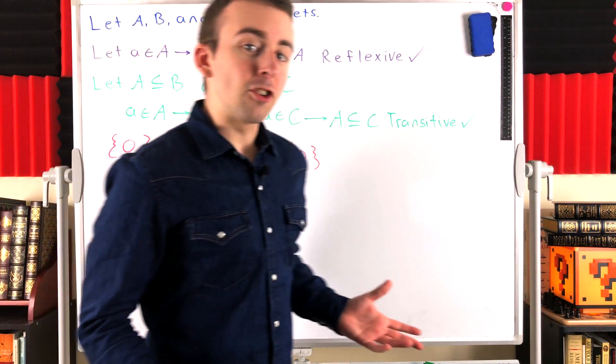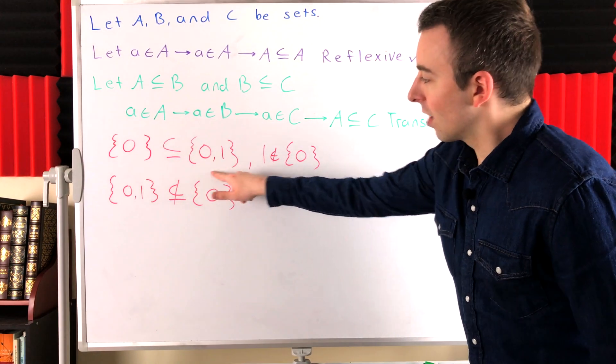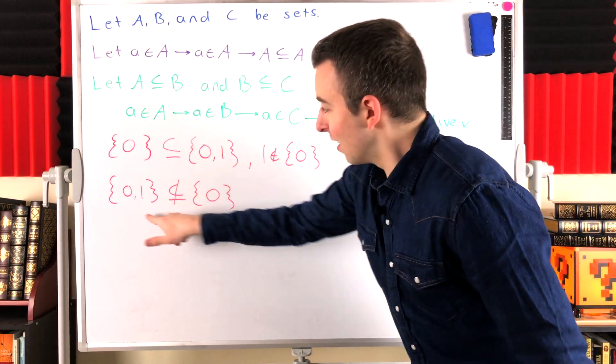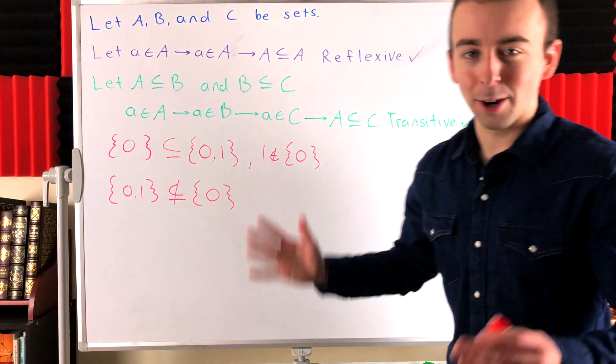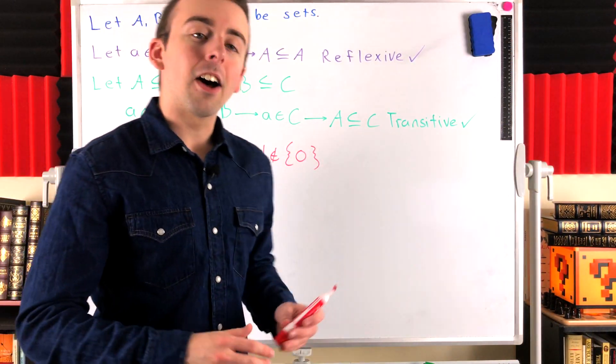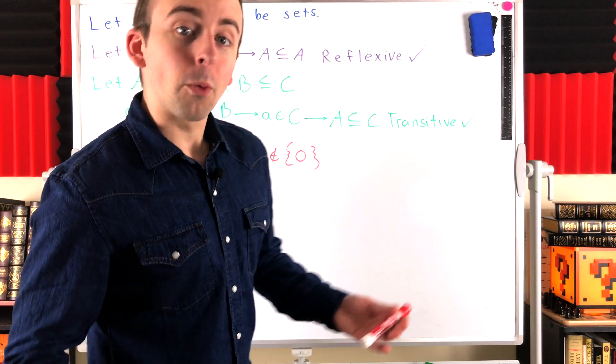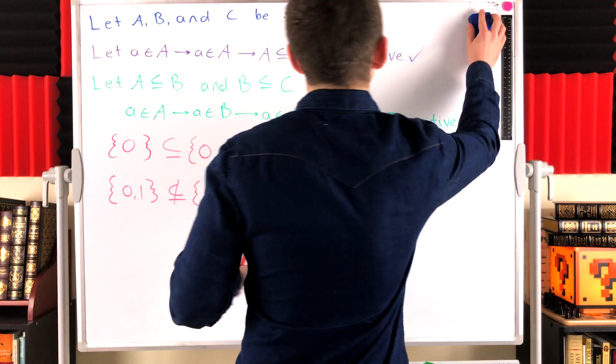Thus, the subset relation is not, in general, a symmetric relation. Here, we have this set is a subset of this one, but this one is not a subset of the first one. So, no, the subset relation is not symmetric. Thus, it cannot be an equivalence relation. So, hopefully, that helps you see, by definition, why subset is not an equivalence relation.